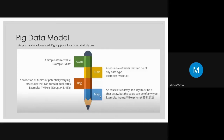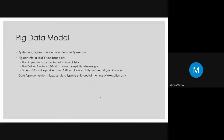These are the four basic data types of the Pig data model. You need to remember these four data types. By default, if Pig has undeclared fields, it takes them as byte arrays.